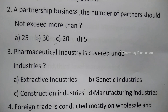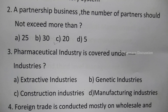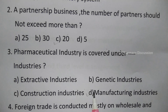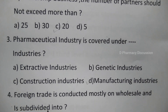Question 3: The pharmaceutical industry is covered under which industries? Option A: extractive industries, B: genetic industries, C: construction industries, and D: manufacturing industries. The correct answer is option D, manufacturing industries.